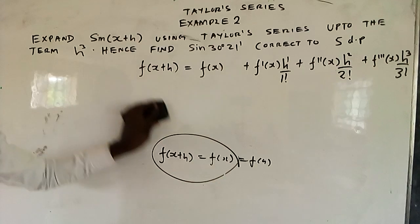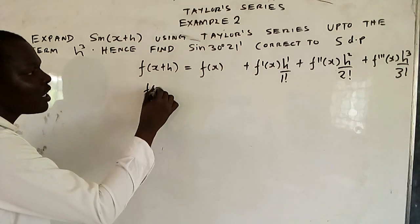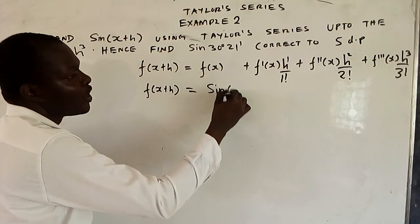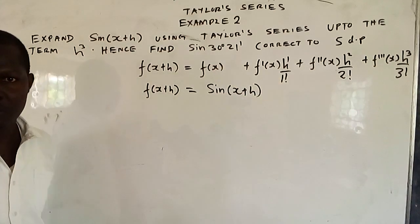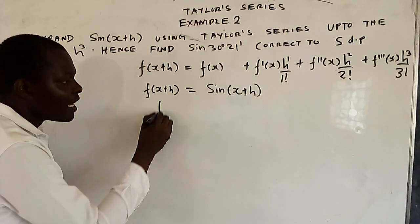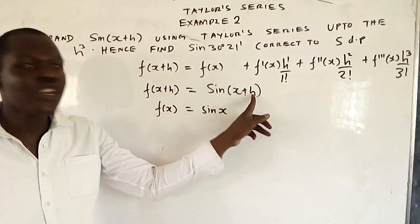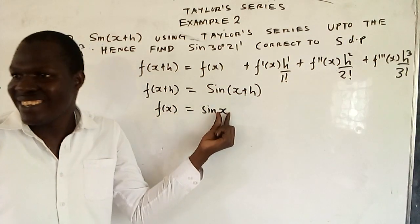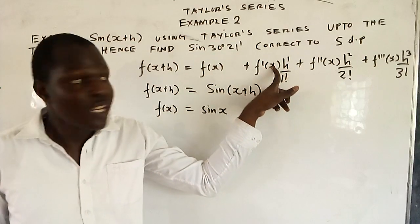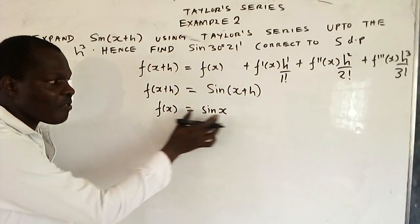Now, what is your function f of x plus h? You've been told it is sine x plus h. So if h is not there, if h is zero, it means f of x equals sine x. We need f of x, f prime of x, f double prime of x, and f triple prime of x. We've already found f of x to be sine x.